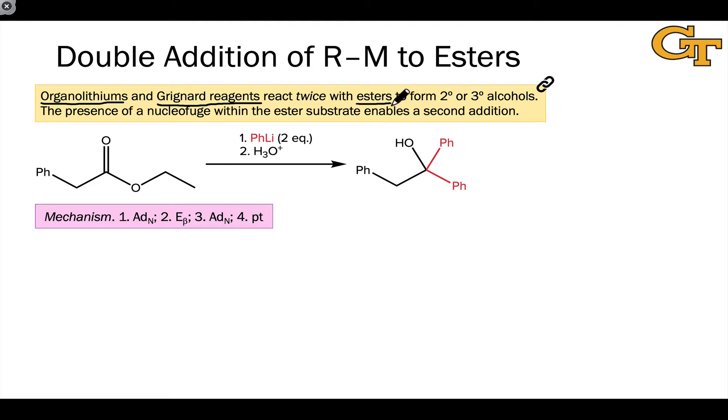The product we get from this reaction looks interesting. We get two additions of the organolithium, in this case, to the carbonyl group, and somehow the ethoxy group within the ester has disappeared. What seems to have happened is a double addition type of process, or a substitution followed by addition process. And we'll see that the structure of the ester enables this reactivity.